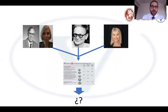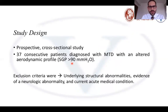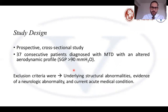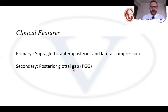For materials and methods, we performed a prospective cross-sectional study including 37 consecutive patients with MTD, all with an abnormal aerodynamic profile — more than 90 mmH2O of subglottic pressure. We excluded patients with underlying structural abnormalities including glottal insufficiency, neurological abnormalities, or acute medical conditions such as upper airway infections. As primary features we assessed supraglottic anterior-posterior and lateral compression, and as a secondary feature we also assessed the posterior glottal gap.